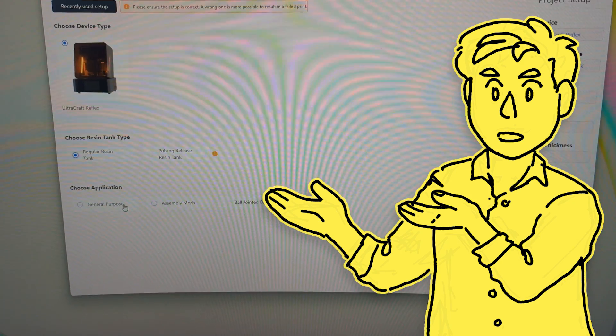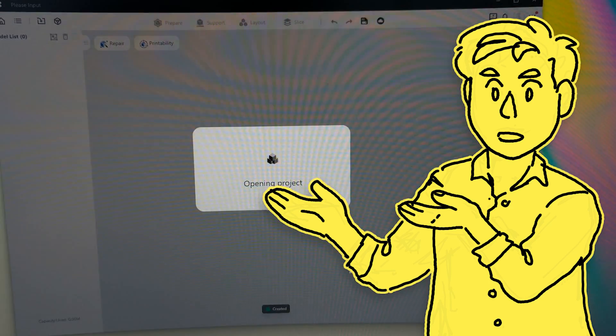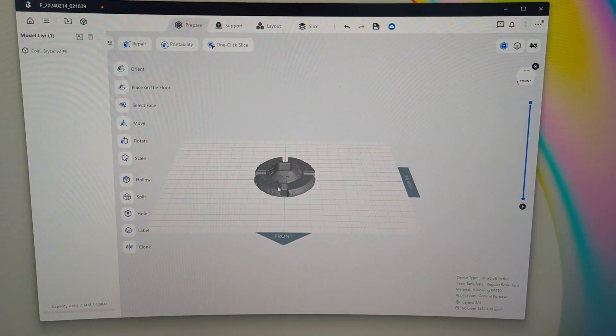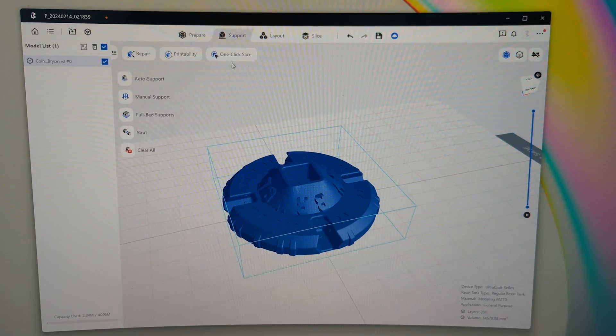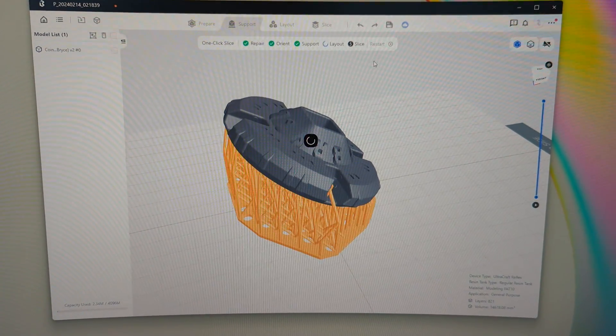Now that we have the printer set up, let me walk you through the entire printing process. For my initial test I'm going to be printing my MakerCoin, just like I do for every new 3D printer that I get my hands on. I ended up using the one click slice button, which repairs the model if needed, automatically orients it, then adds support.